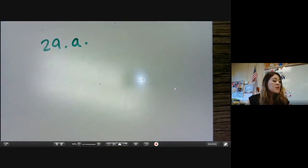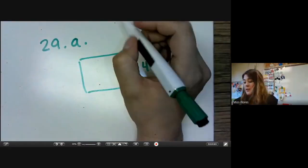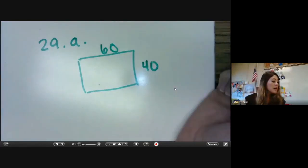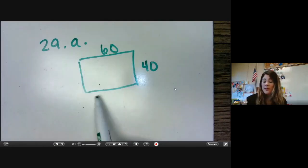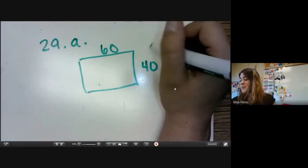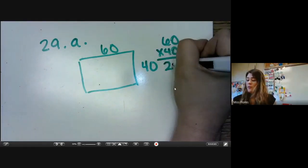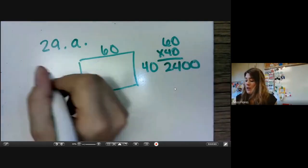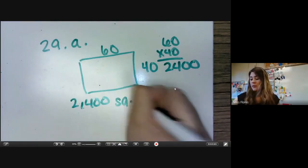29A says how many square feet of shingles are needed to cover a rectangular roof that is 40 feet wide and 60 feet long. So we need to figure out the area, because we need to know the square feet that they need to cover the whole thing. So we need to multiply 60 times 40. 6 times 4, 24, and we add two zeros. So we get A is 2,400 square feet.